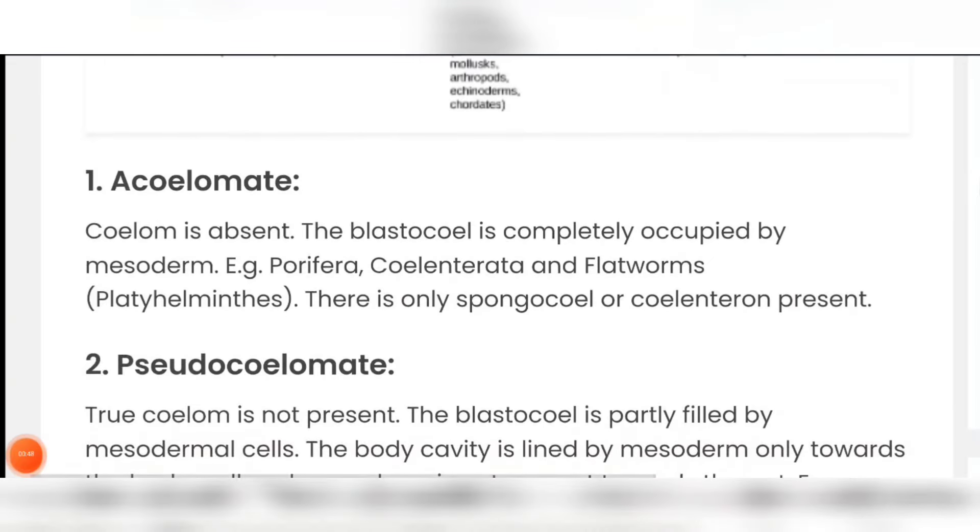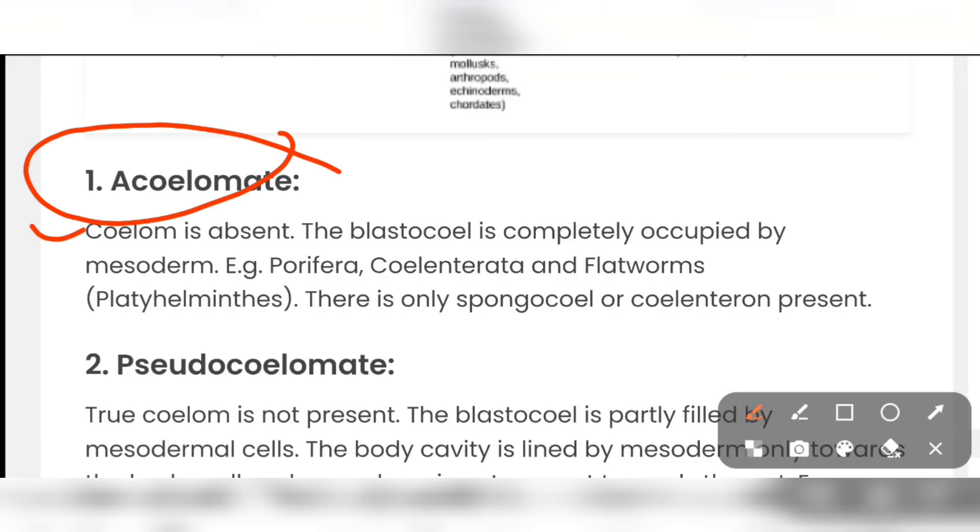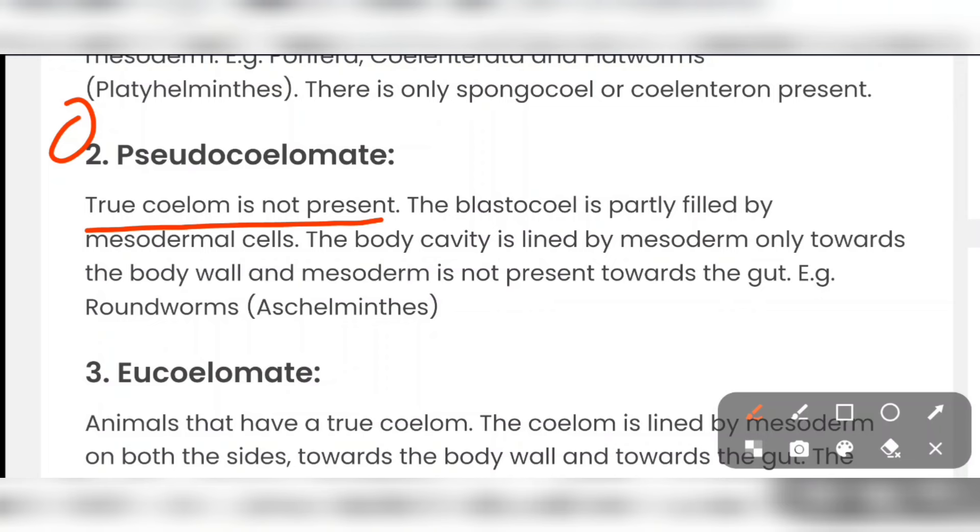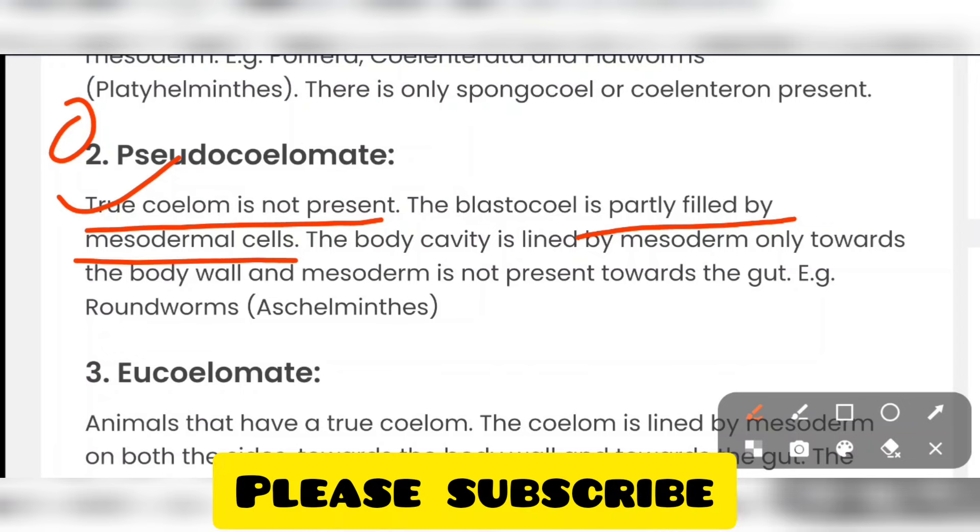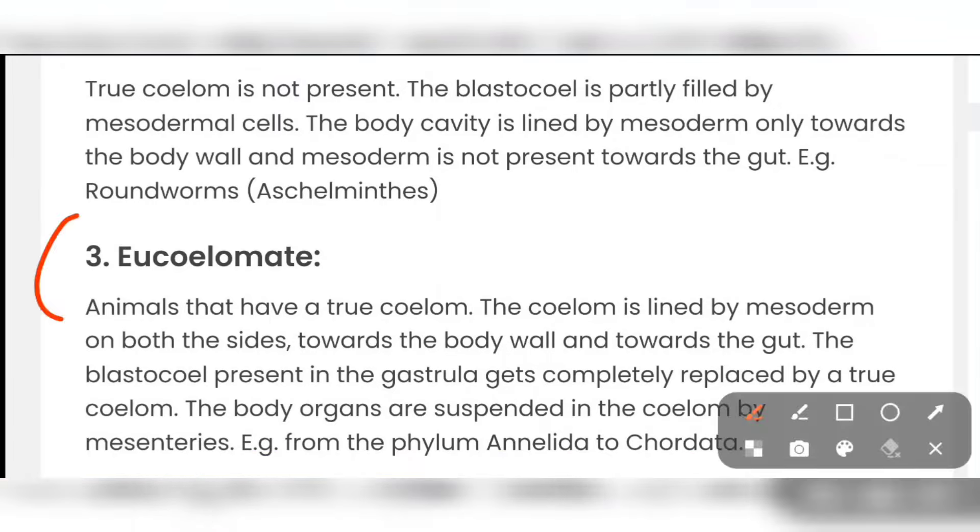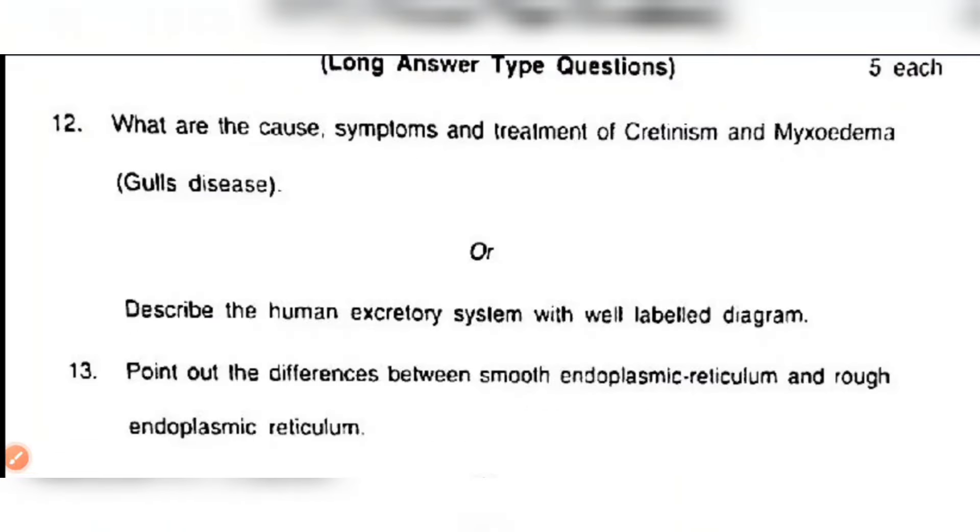Acoelomate means coelom is absent. It is present in porifera, cnidaria, and flatworms. Remember that. Then we have pseudocoelomate. True coelom is absent in this. True coelom is not present. The blastocoel is partially filled by mesodermal cells. The example is roundworms or aschelminthes. Then we have the last one, this is eucoelomate. Animals that have a true coelom. From the phylum Annelida to chordates.